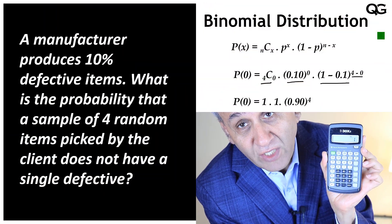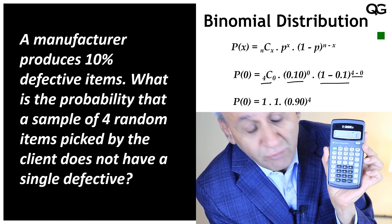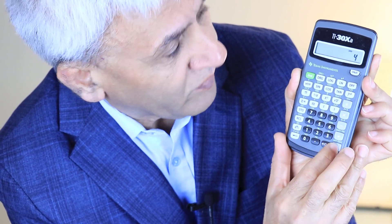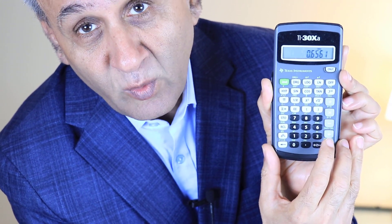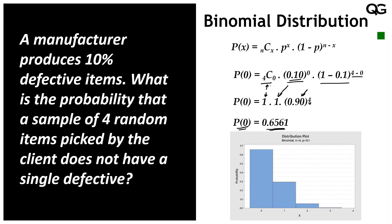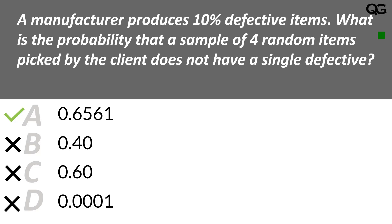The result is 0.6561. Two of the three components equal 1, and 0.9 to the power 4 gives 0.6561, which is the answer. The same calculation can be done in software such as Minitab, which shows the probability of zero defectives is approximately 0.65, one defective around 0.29, and the probabilities of two, three, or four defectives are very low. The correct answer is choice A: 0.6561.